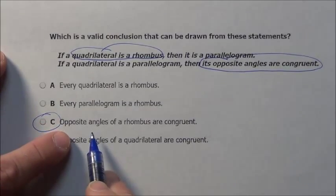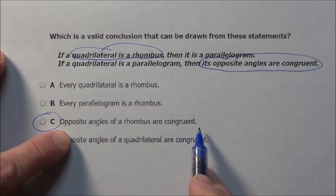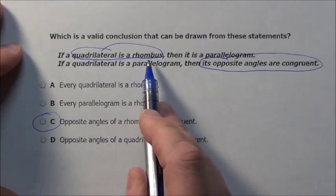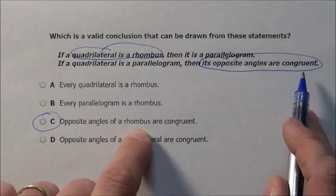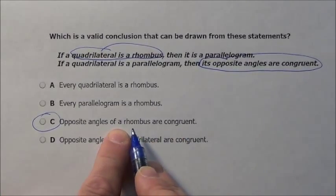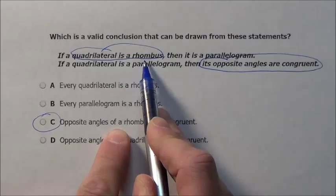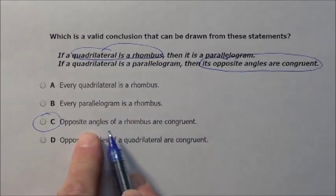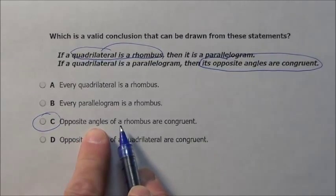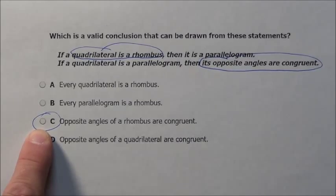Looks like C — opposite angles of a rhombus are congruent. If a quadrilateral is a rhombus, its opposite angles are congruent. They changed the wording around just a little bit, but it's the same thing. The conclusion we can draw is choice C.